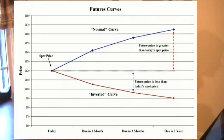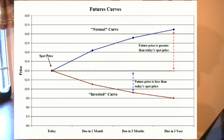Futures curves can be either normal or inverted depending on the price of the future relative to today's spot price. A normal futures curve reflects futures prices greater than today's spot price. Inverted curves, on the other hand, have futures contract prices that are lower than today's spot price.